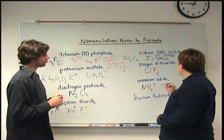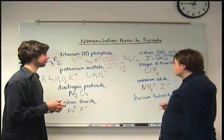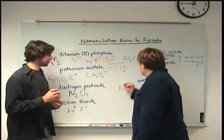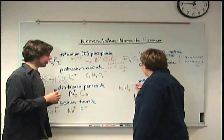Iodide—that's just an I with a minus. Group seven. Put them together: NH4I.